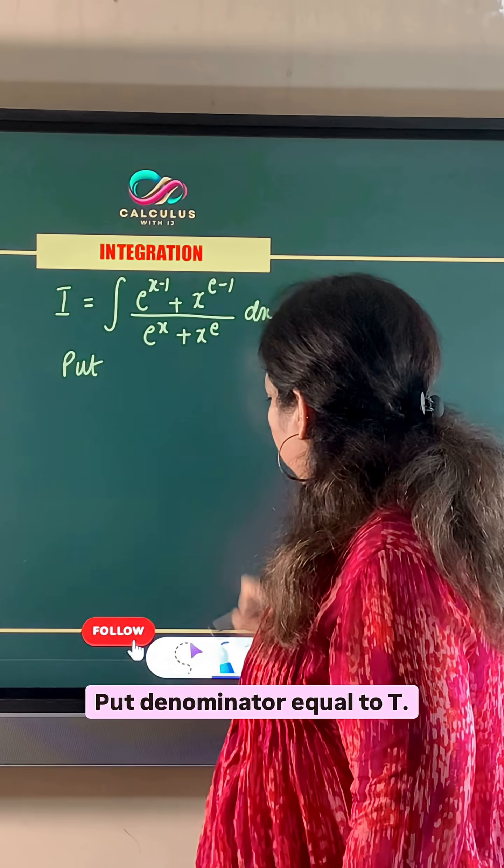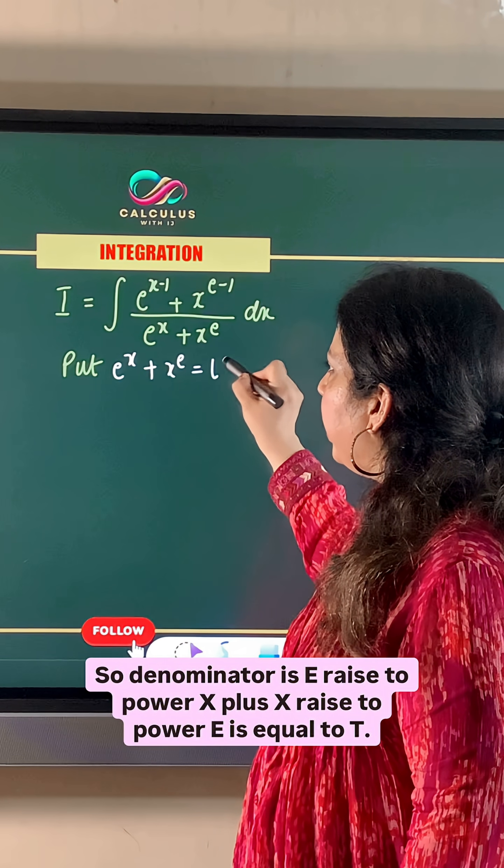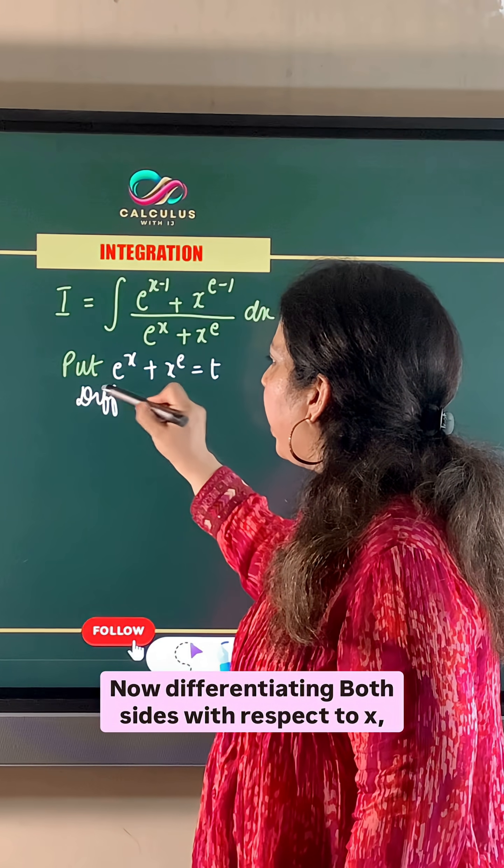Put the denominator equal to t, so e raised to power x plus x raised to power e is equal to t. Now differentiating both sides with respect to x.